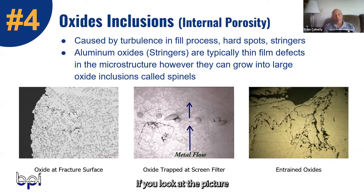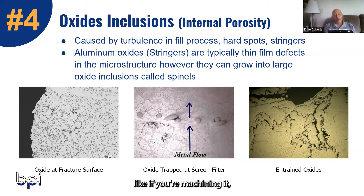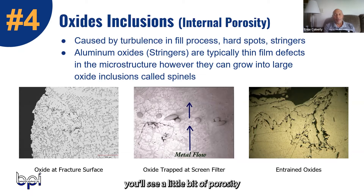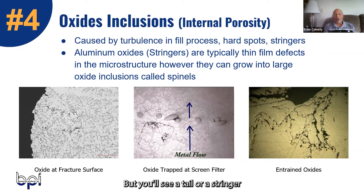If you look at the picture on the far right, even at a macro level — like if you're machining it — a lot of times you'll see a little bit of porosity that you've picked out as you've machined it, but you'll see a tail or a stringer tending to come out from behind it.